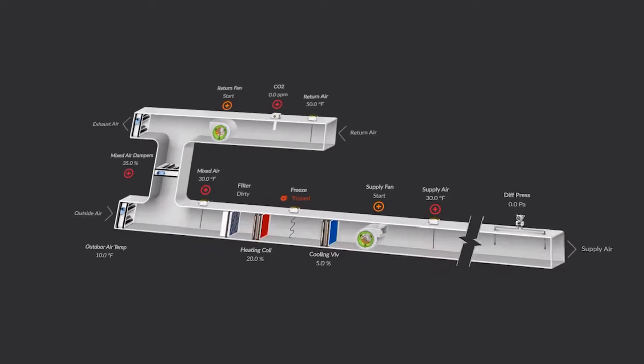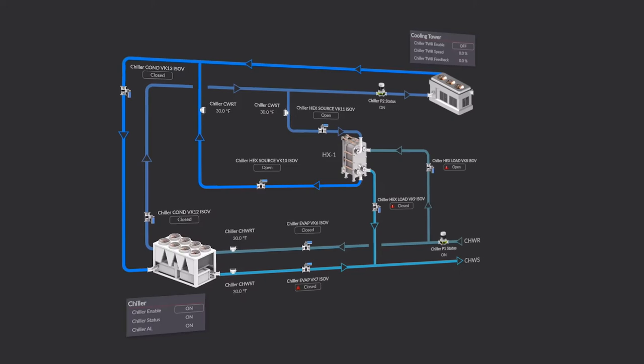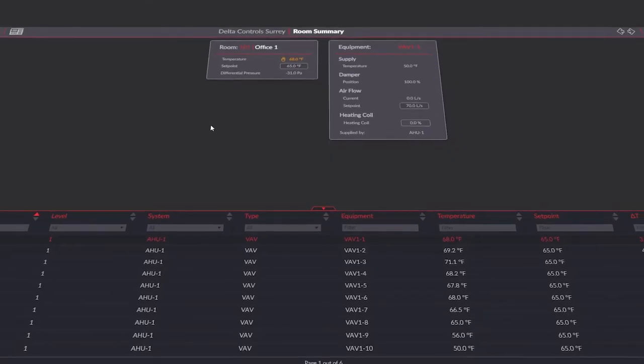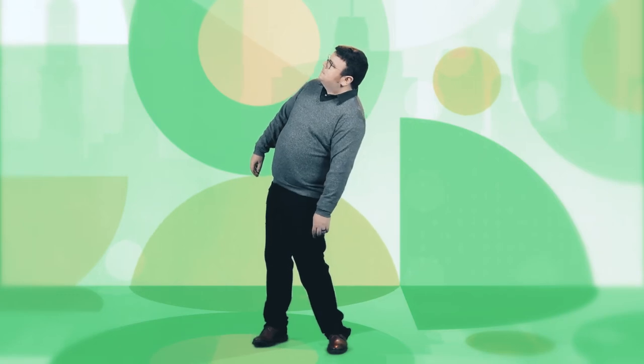We have given the option to download either a standard building template or a campus template for larger sites. Once you open this graphic template, you will be able to see that it has many pre-made graphics and symbols that can be used in your project. Some graphic samples include airflow systems, plant systems, and unit summaries. The theme is also fully customizable.